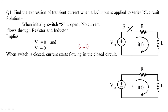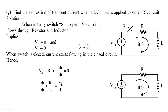We apply KVL to the closed circuit to find the expression for i(t). Applying KVL gives: minus V_in plus R·i plus L·di/dt equals zero. Reframing the equation, di/dt plus (R/L)·i equals V_in/L. This is the main equation framed by applying KVL, and we treat this as equation 2.